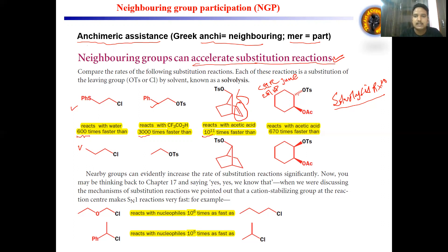This example came in CSIR June 2018, a 4-mark question. We have cyclohexane with both substituents either anti or syn. The anti-reaction is actually 70 times faster. All the reactions will be discussed here on the basis of reaction mechanism and stereochemistry.